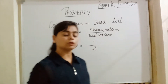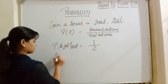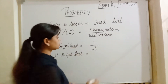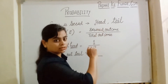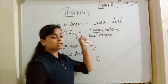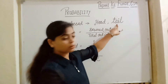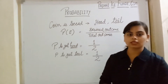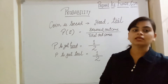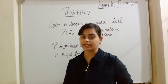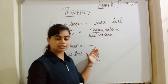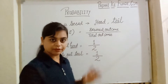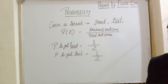And if we talk about the probability to get a tail, the total possible outcomes are two — head or tail — and the desired outcome, tail, is one. So the probability of tail is also one by two. In simple words, there are fifty-fifty percent chances to get a head or a tail — half chance for head and half chance for tail. If we add both, the total probability is one.